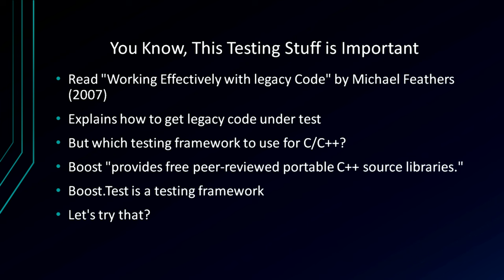The only way to get a handle on this codebase was to get some automated tests on it. If I can get the current behavior controlled by a test, then when I change the code structure but want to keep the same behavior, I can run the test — if it passes, I didn't break anything. I read Working Effectively with Legacy Code by Michael Feathers, which explains how to get legacy code under test. We'd be writing a lot of tests, so I needed a test framework. I looked at Boost.Test from the Boost organization — peer-reviewed portable C++ libraries.